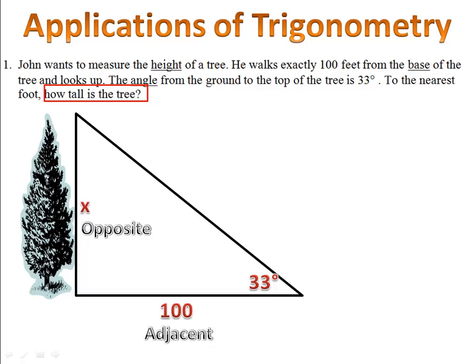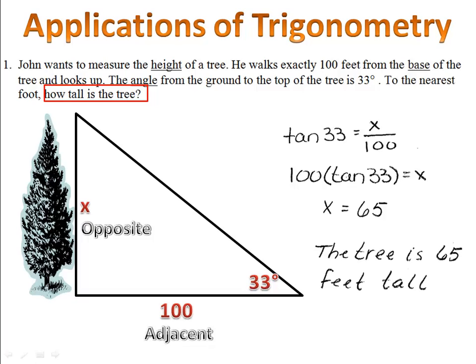Notice that I have here the opposite and the adjacent. Which of our three trig ratios uses the opposite and the adjacent? Well, that's the tangent. So the tangent of 33 degrees equals opposite X over adjacent 100. Now I can cross multiply and plug that into my calculator and I get X equals 65. The tree must be 65 feet tall.